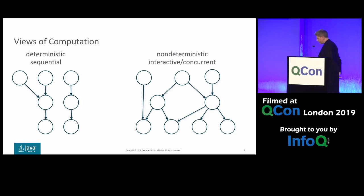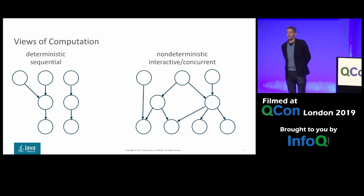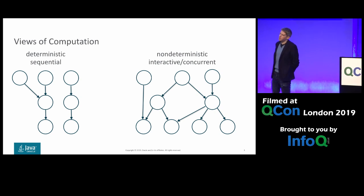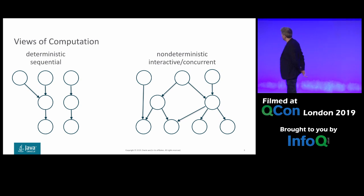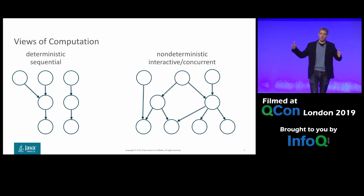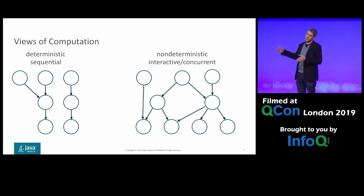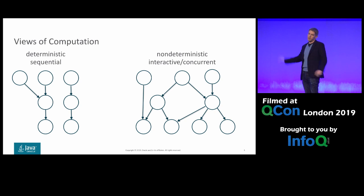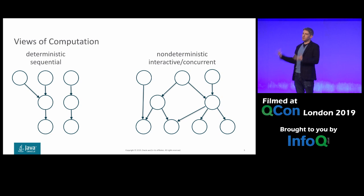Our views of computation have changed based on what we use computation for. Traditionally, we used to think of computation as being deterministic. The circles we see here can be thought of as program states. On the left we have deterministic computation — we don't know which state we start in, but once we do, there's only one outgoing edge per state. So once we start, we know where we'll end up. This view sees computation as a function: you have an input and you get an output.